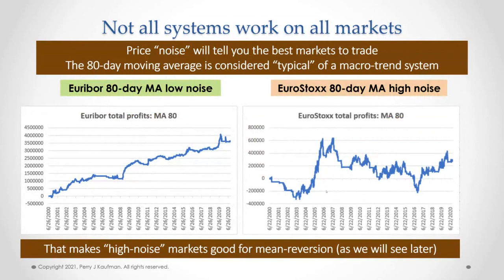To demonstrate this, I took an 80-day moving average of Euribor, one of the best trending markets, and the results of a simple moving average system do quite well. Then I took the same 80-day moving average of Euro Stoxx — the noisiest market — and it clearly does not do well. There is a clear relationship between noise and your ability to make money using a trending system.